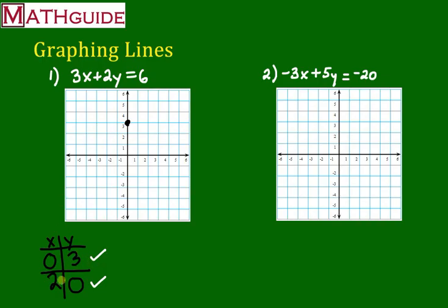Now let's graph the next point, 2, 0. That's the next point right there, 2, 0. So that means I'm going to go 2 to the right, 0 up. So it's going to be right here. I'm going to put that point right there.